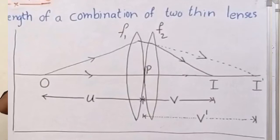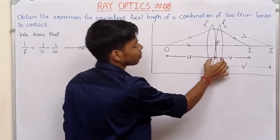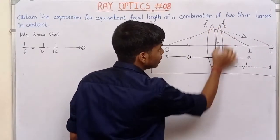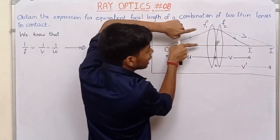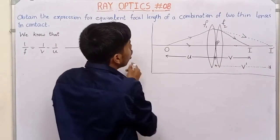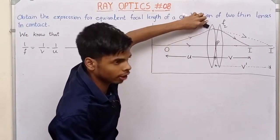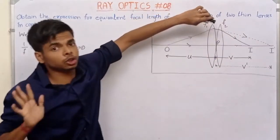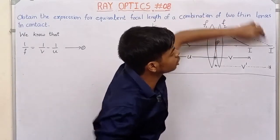Draw the diagram. The diagram will be displayed on screen — pause the video and copy the diagram. Through a lens, only refraction happens. The lens cannot bend light on its own and change direction, so it cannot form an image without proper refraction.